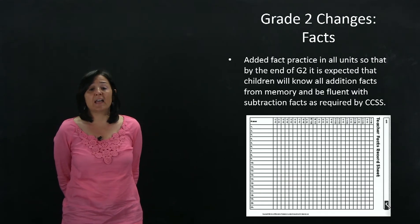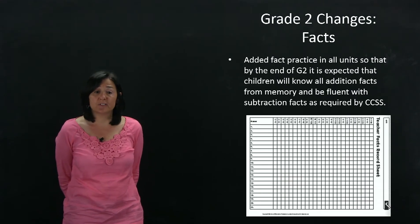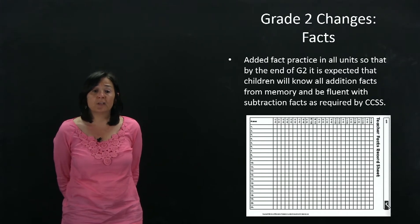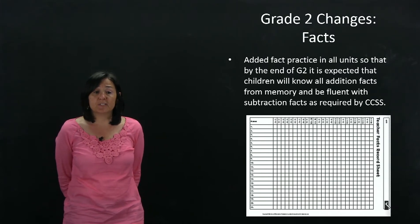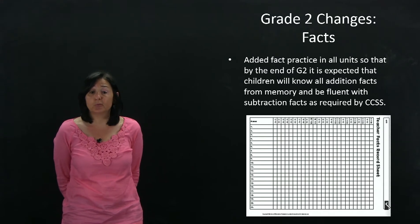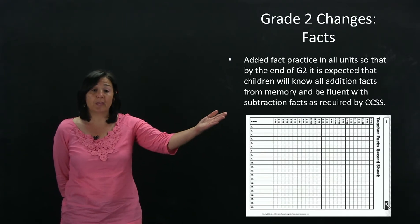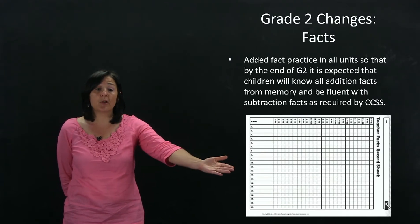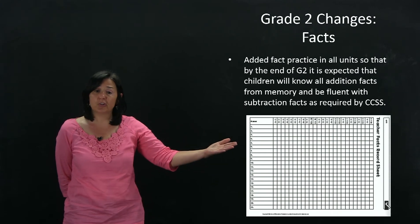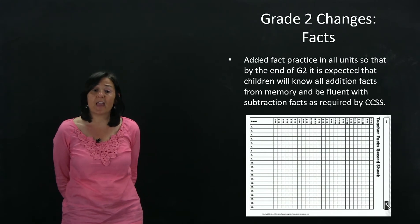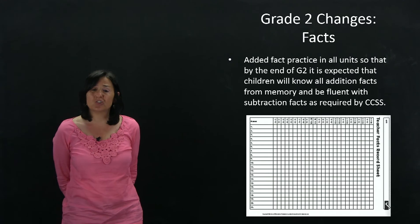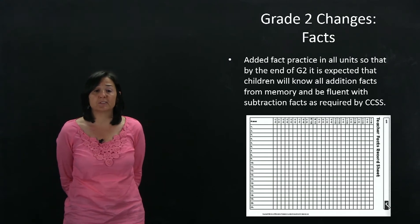We've also added lots of practice in all the units so that we can be sure that children will meet the Common Core state standard of knowing all addition facts from memory and being fluent with the subtraction facts as required by Common Core by the end of Grade 2. Here you'll see we have included a record sheet for the teacher so she can circulate as children are practicing their facts and document which facts children still may need more practice with.